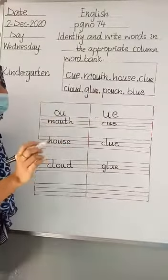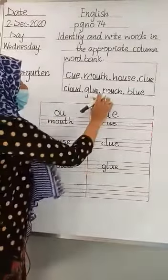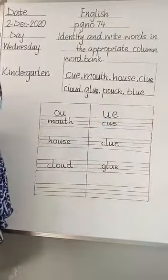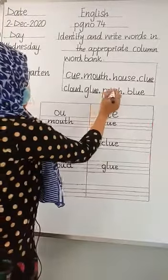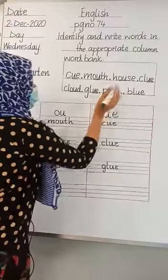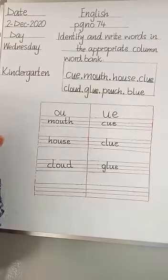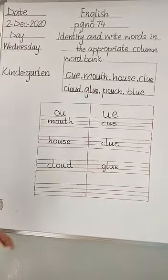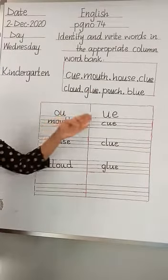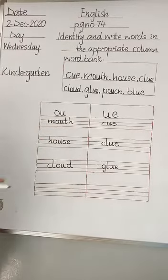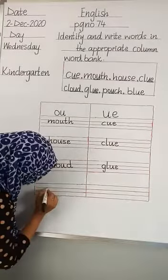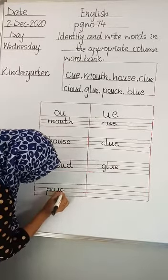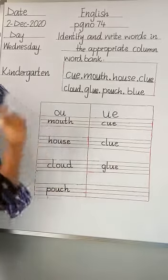Now come to the next word. The next word is P-O-U-C-H, 'pouch'. Look at the word 'pouch'. The word 'pouch' has 'ow' sound. So where do we write the word 'pouch'? We have to write the word 'pouch' in the 'ow' sound column. P-O-U-C-H.